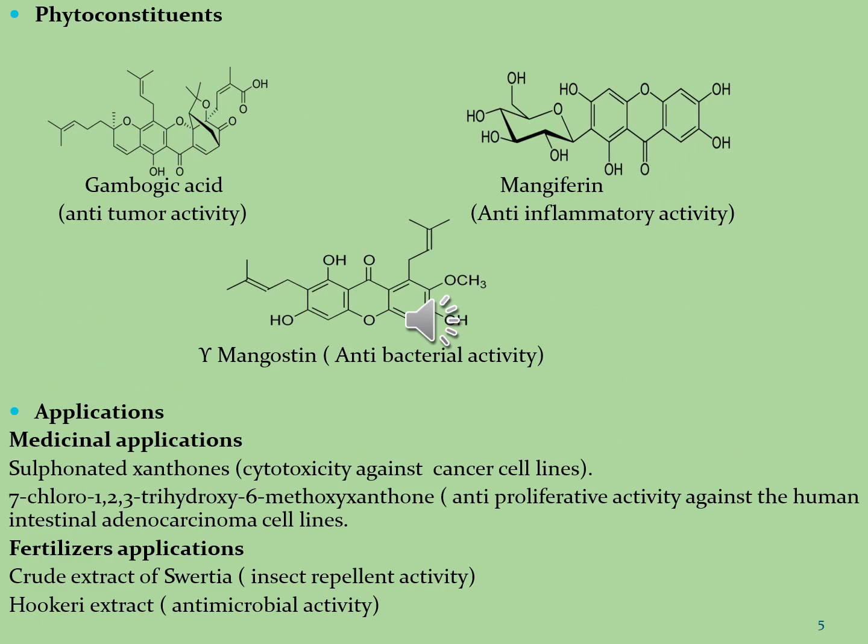These are the phytoconstituents which fall in the category of xanthone molecules. The first molecule is gambogic acid, which is rich with anti-tumor activity. The second molecule is mangiferin, which is rich with anti-inflammatory activity. The third molecule is mangostin, which is rich with antibacterial activity.